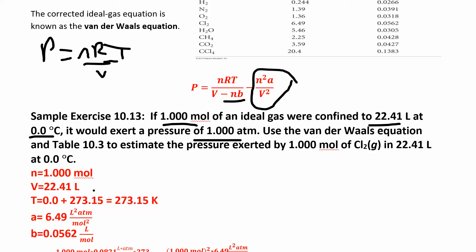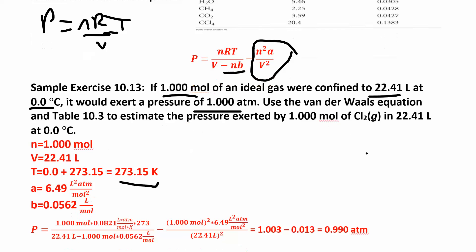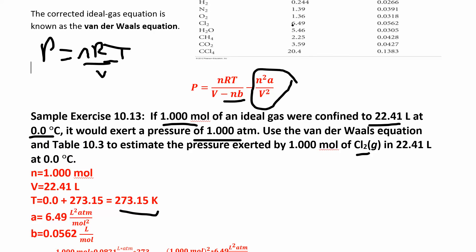I have my moles, my volume, my temperature converted to Kelvin. I have chlorine gas, so I look up the constants. A is 6.49 and B is 0.0562.